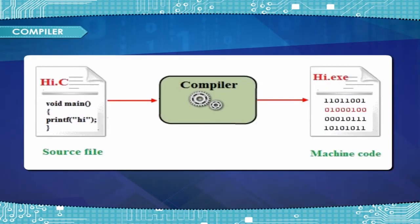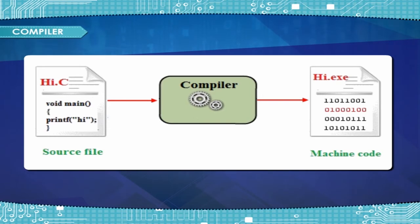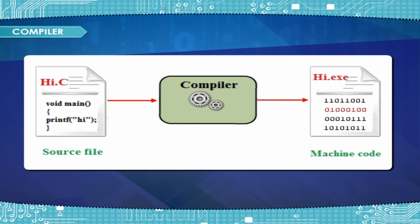Compiler and interpreter are used as translators in high-level languages. A compiler is a translator program that converts the whole HLL source program into object code — machine program code — at once, and also generates a list of errors and shows it to the user.